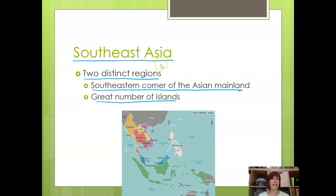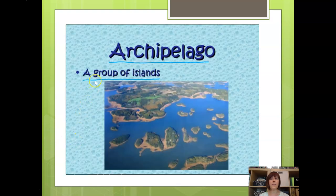I want to begin with Southeast Asia. Southeast Asia is really two distinct regions. It includes the southeastern corner of the Asian mainland — just south of China is the region we're looking at. It also includes a great number of islands, fairly large islands in some cases. Most of the islands are archipelagos, and an archipelago is a group of islands.